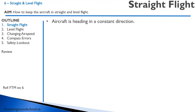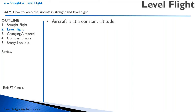Let's begin with a couple of definitions. Straight flight means that the aircraft is heading in a constant direction. Level flight means the aircraft is at a constant altitude. This means that straight and level flight is when the aircraft is flying at a constant altitude and constant heading. If we are flying and our altitude remains constant but we're turning, that means we're in level flight but not straight flight.